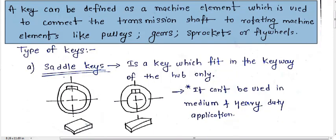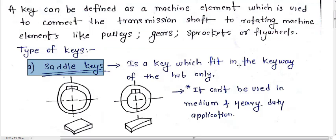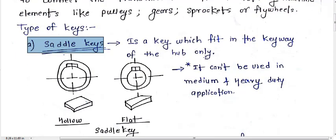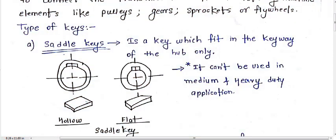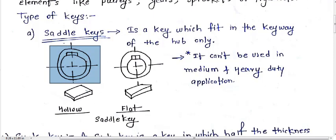There are different basic types of key. The first one is the saddle key. A saddle key fits in the keyway of the hub only. The outer circle seen in this figure is the hub and the internal circle is the shaft. This rectangular section is known as a key, and this slot is the keyway.